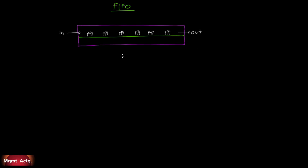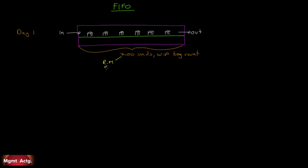Items come in one end and go out the other end. On day one, let's say that everything on the line right now represents 200 incomplete units — this is our work-in-process beginning count. We're going to move away from weighted average to FIFO. In terms of raw materials, a certain percentage of these units are done.